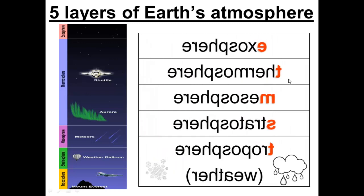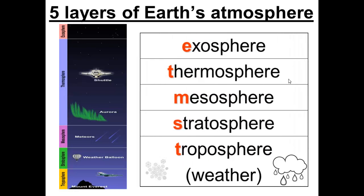There are five layers in the Earth's atmosphere. Most weather conditions only happen in the bottom layer, the troposphere. As you go up through the five layers, temperatures and air pressure changes.